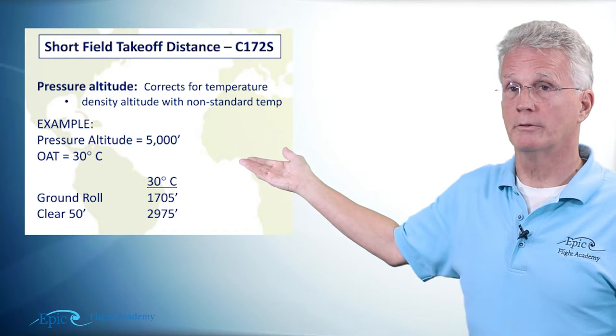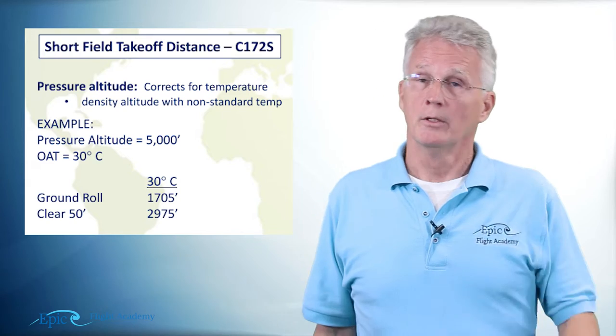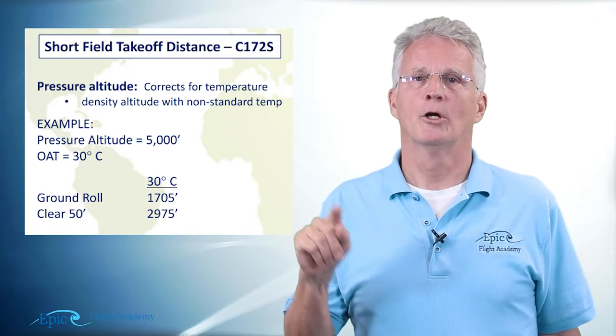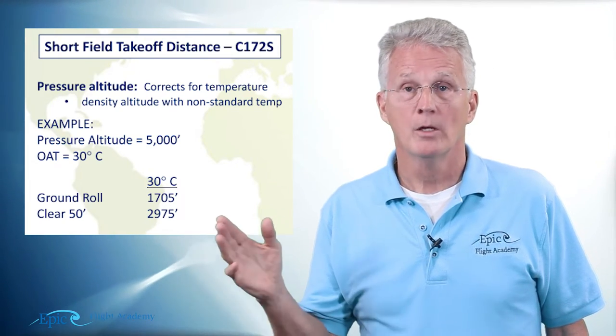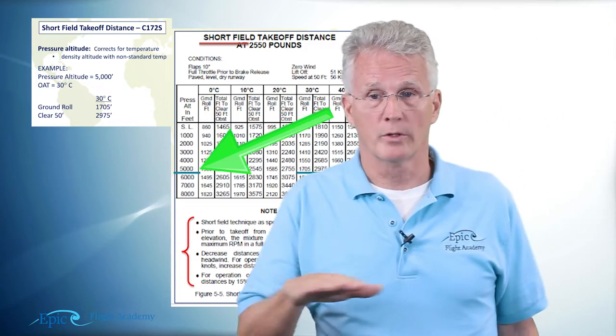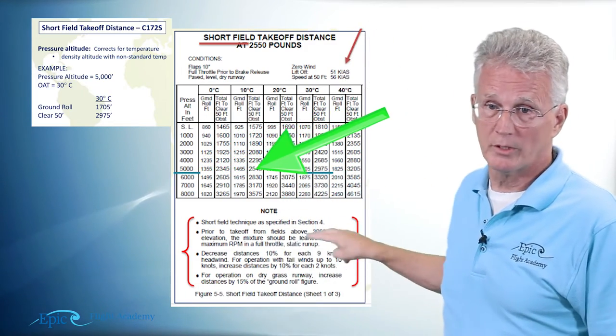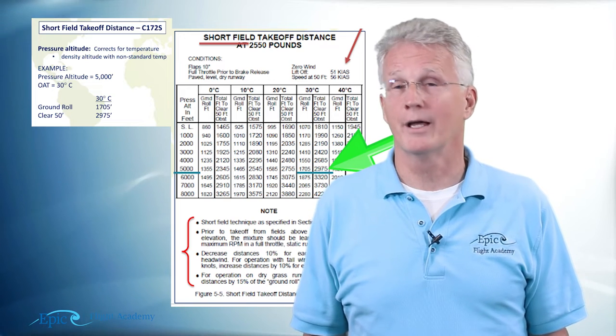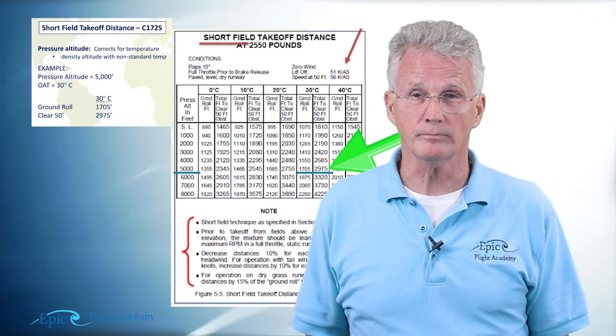So let's say today we have a 5,000-foot pressure altitude and an OAT of 30 degrees. Now for those of you who ride horseback out in Colorado and Wyoming, that is not the oats for your horse, that is outside air temperature. So in our case we're going to come down the pressure altitude column, there it is, 5,000 feet, you can see it here. Then we're going to move horizontally right down the 30 degrees Celsius and we find that our ground roll is 1,705 feet and to clear a 50-foot obstacle 2,975 feet.